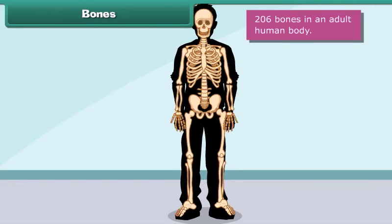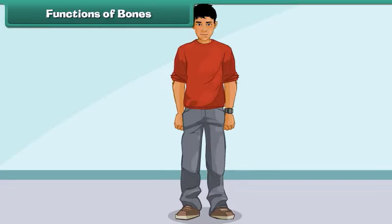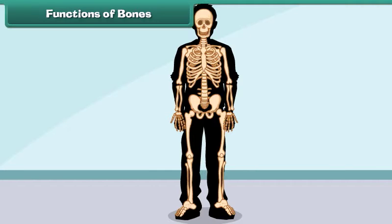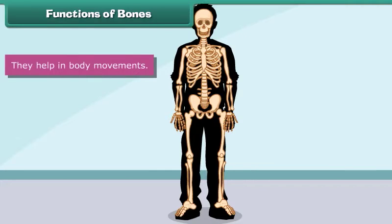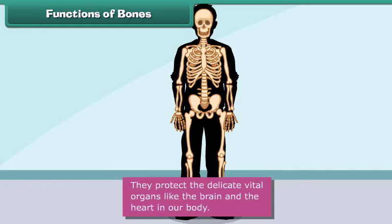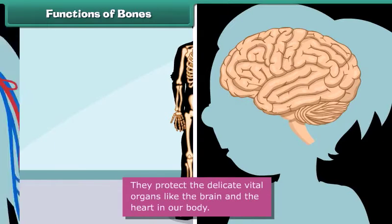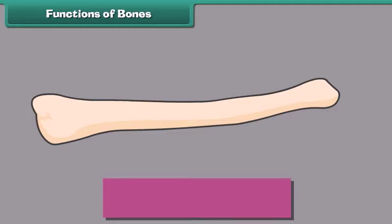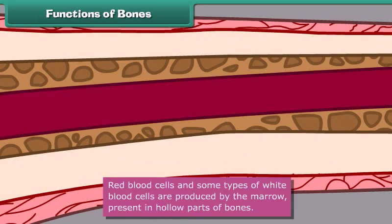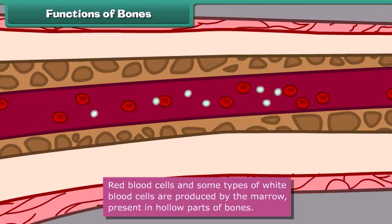What functions do bones perform? Bones give shape and support to the body. They help in body movements. They protect the delicate vital organs like the brain and the heart in our body. Red blood cells and some types of white blood cells are produced by the marrow present in hollow parts of the bones.